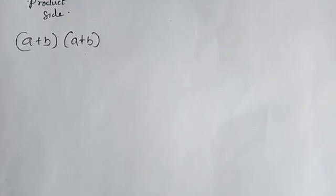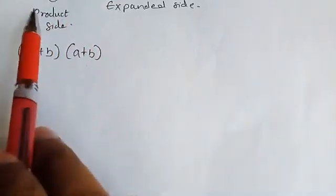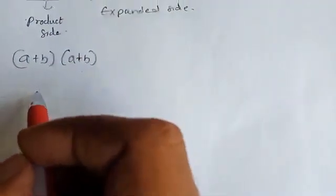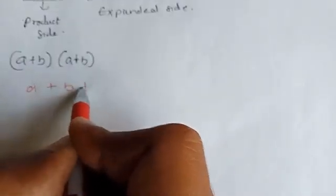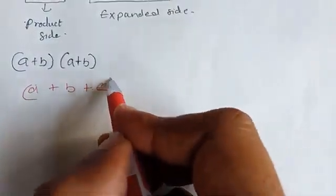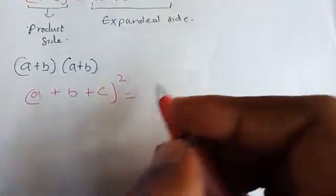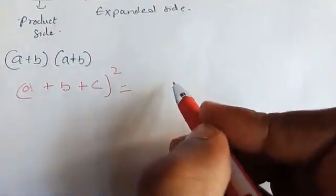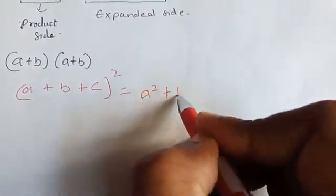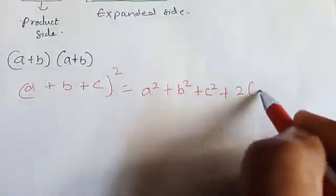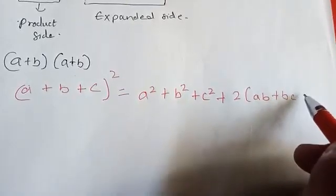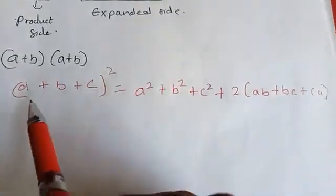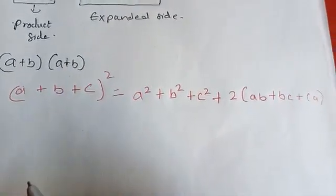In previous classes we have already studied (a + b)² and (a − b)². Now we'll look at some other formulas. One formula that is new in your book is (a + b + c)². The answer — the expanded form — is a² + b² + c² + 2ab + 2bc + 2ca. This is called the expanded side; the original expression is called the product side or the simplified side.